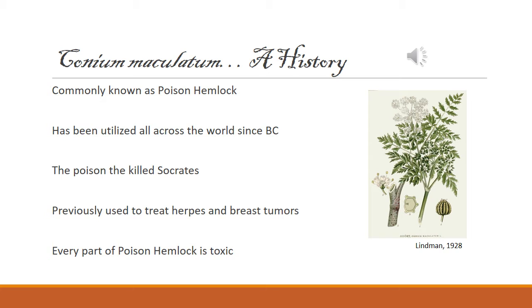Every leaf, stem, flower, and root of the poison hemlock plant contains these toxic molecules, yet somehow the ancient Anglo-Saxons figured out a way to use it externally as a way to treat herpes and breast tumors.